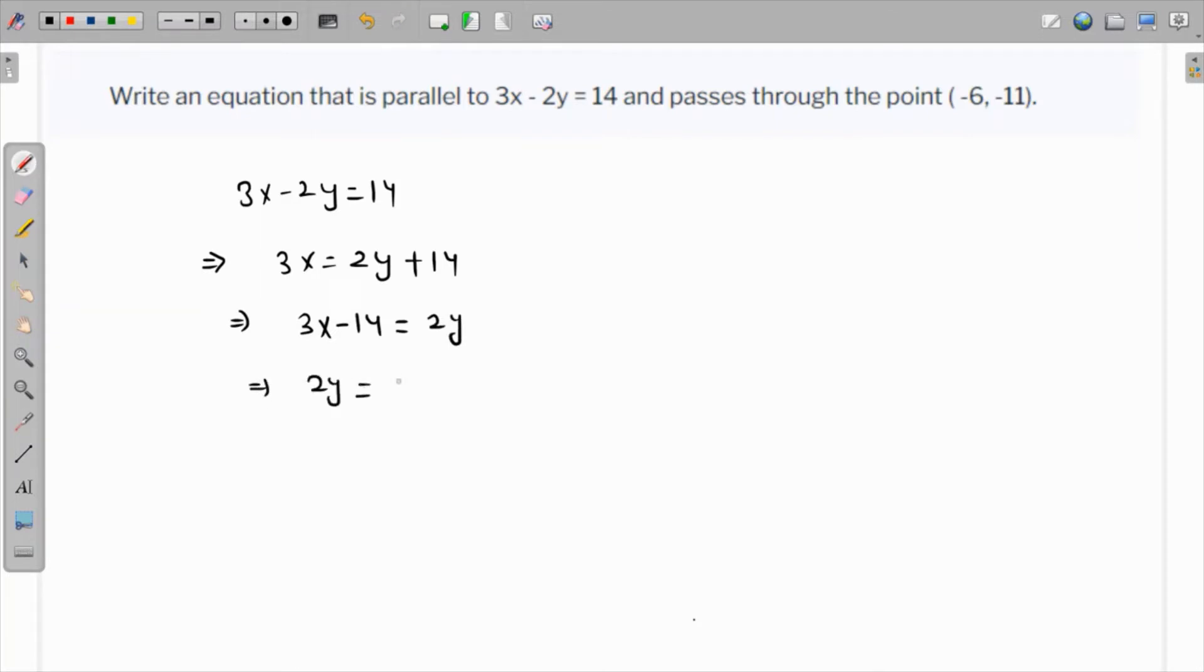And if we flip this then 2y is equal to 3x minus 14, which means that the value of y is 3 over 2x minus 14 over 2 which is 7. So if we compare this with y is equal to mx plus c then the value of slope is 3 over 2.